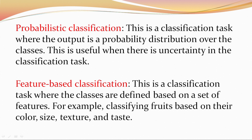Next is probabilistic classification. This is a classification task where the output is a probability distribution over the classes. This is useful when there is uncertainty in the classification task.